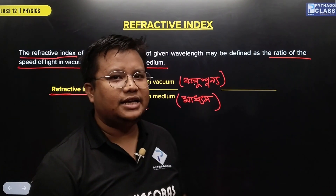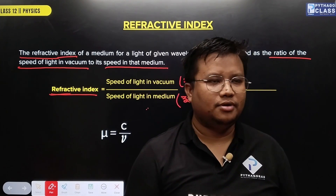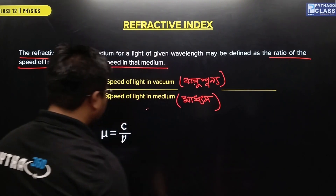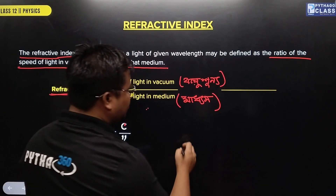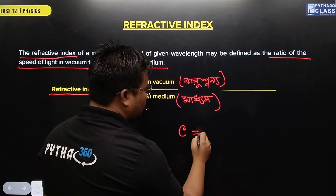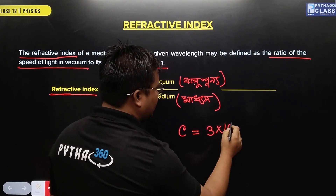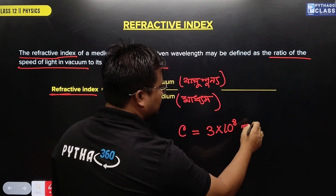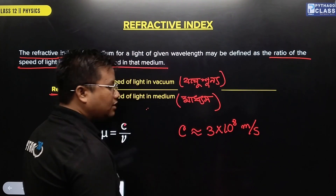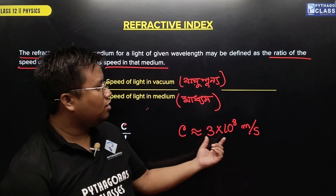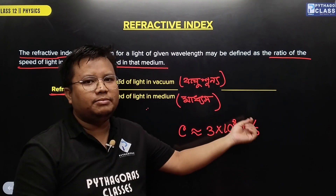The refractive index is defined as the speed of light in vacuum divided by the speed of light in the medium.